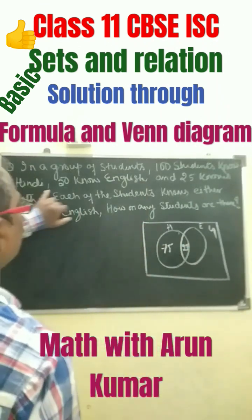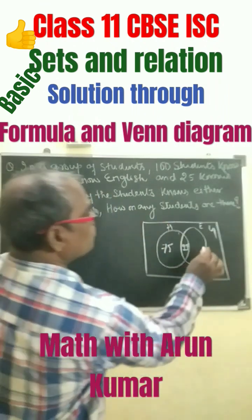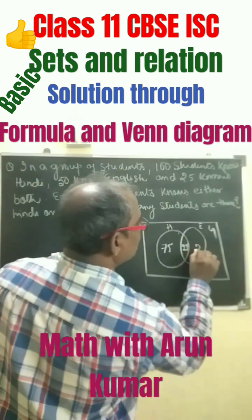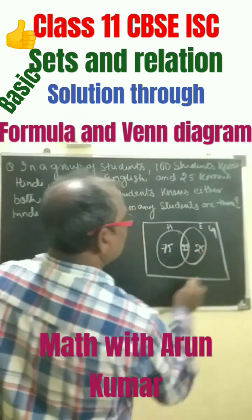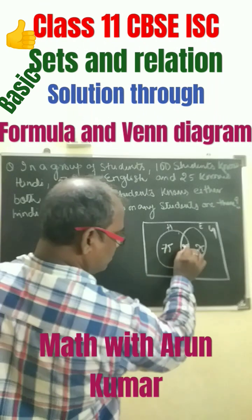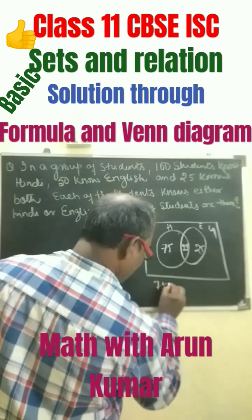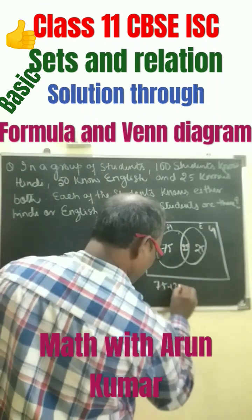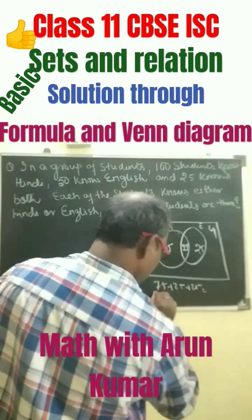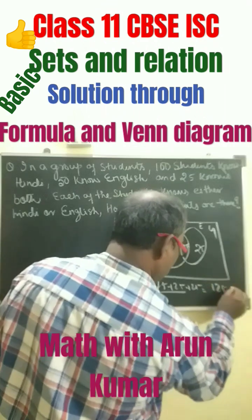Next, the number of English students — they know 50. So 50 minus 25 is 25. If you add it all up: 75 plus 25 plus 25, it becomes 125 students.